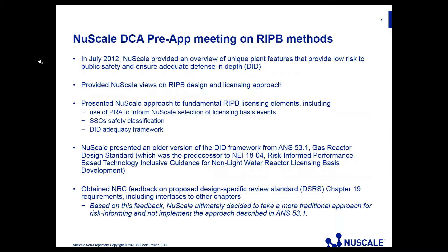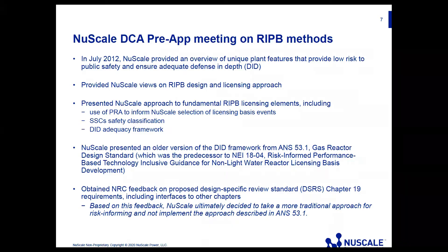Beyond that initial topical report, we also had meetings with the staff on a specific risk-informed performance-based process. The idea was along the lines that ANS 30.3 is attempting to utilize, as well as the licensing modernization project — the LMP — using the PRA to help inform licensing basis events, safety classification, and defense-in-depth. The goal of our risk-informed performance-based pre-application meetings was to understand from the staff where we were in attempting to push those ideas during the DCA phase.